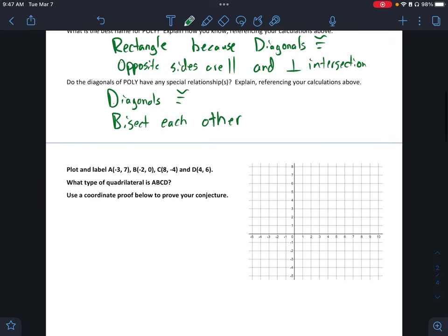Then the next part you kind of have to do on your own. So let's make sure we label everything correctly. We have A here at negative 3, 7. B at negative 2, 0. C at 8, 4. C, 8, 4. And D at 4, 6. Sorry, that one should be 8, negative 4. I didn't think that looked right. 8, negative 4. And D at 4, 6. So this one is a little bit hard to identify what our shape is, or at least I thought so. But again, we need to just start calculating some of these things.